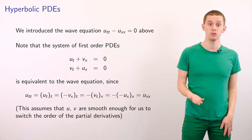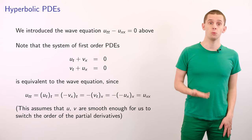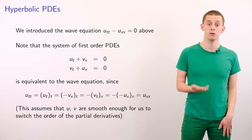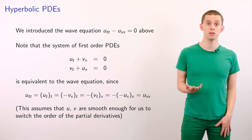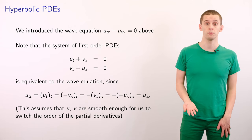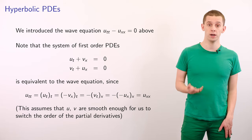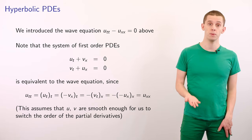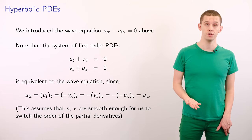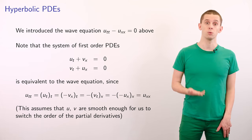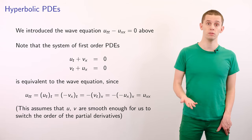In the previous video we introduced the wave equation Utt minus Uxx equals zero as the prototypical hyperbolic PDE, and we can note that the wave equation can actually be written as a system of first-order PDEs for two functions u and v, where we have that ut plus vx is equal to zero, and vt plus ux is equal to zero. If we look at Utt, we can use our first equation to write this as d/dt of minus vx, and assuming that our solutions are smooth enough, we can write this as minus d/dx of vt, and using our second equation, we can convert this into Uxx. Therefore we see that our first-order system is equivalent to the wave equation.